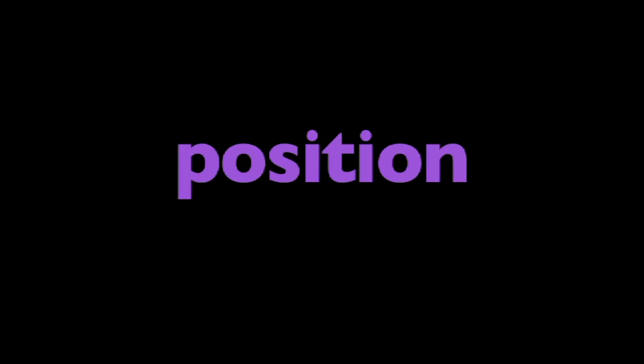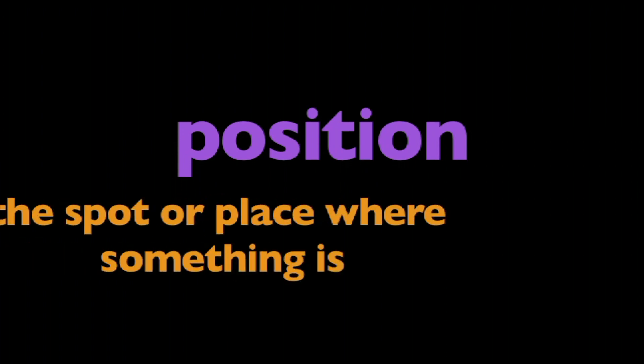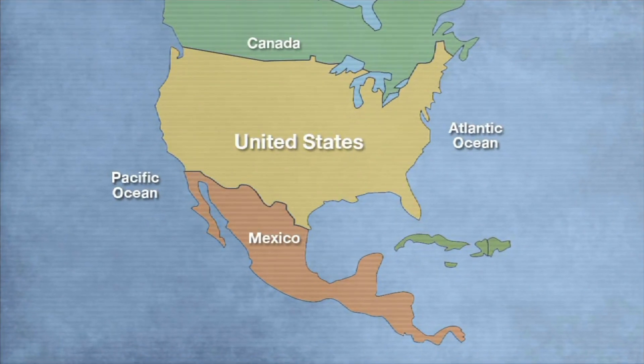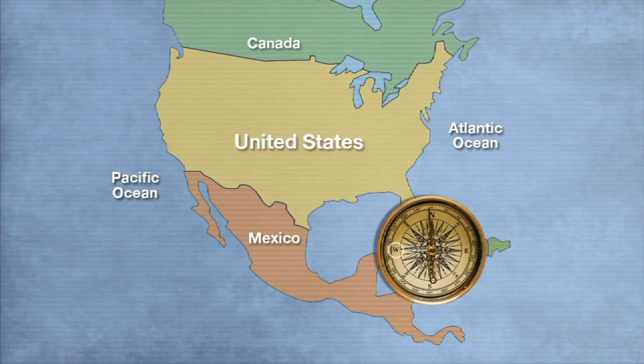In this program, we are going to learn about position. What is position? Position is the spot or place where something is. The position of the Pacific Ocean is to the west of the United States. Position is the location of an object.